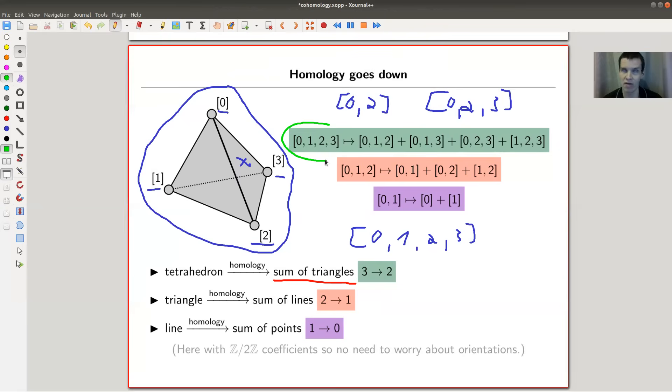0, 2, 3; and 1, 2, 3. So you associate the tetrahedron to its boundary.